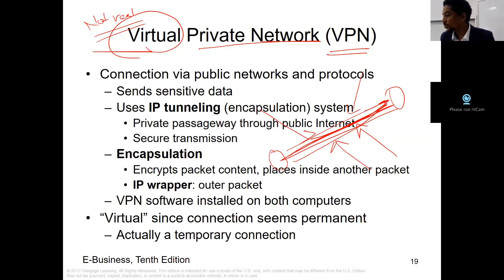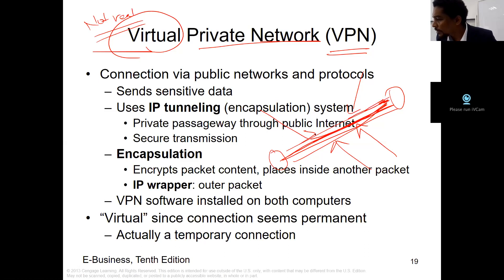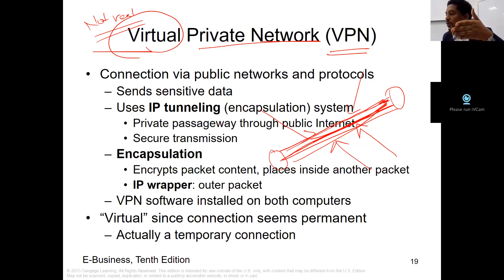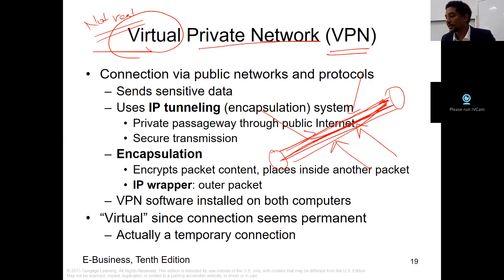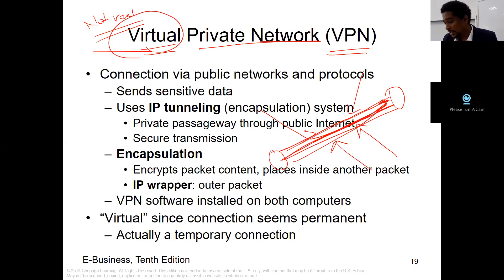A tunnel will be created, and it feels like it's only you and the receiver talking on this line, because this line doesn't allow anyone to interfere — so it is highly secure. In other networks without VPN, data could pass through anyway. A virtual private network is a connection via public network and protocols, but you can send sensitive data because it uses IP tunneling, which is called an encapsulation system.